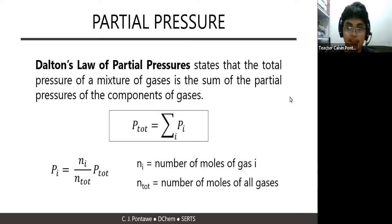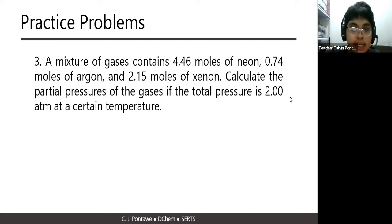So let's have a problem. A mixture of gases contains 4.46 moles of neon, 0.74 moles of argon, and 2.15 moles of xenon. Calculate the partial pressures of the gases if the total pressure is 2 atmosphere at a certain temperature.